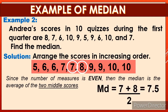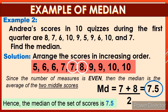So now we have: median equals 7 plus 8 divided by 2. We add the two numbers and divide by 2. That is 7 + 8 = 15, divided by 2, which equals 7.5. Hence, the median of the set of scores is 7.5.